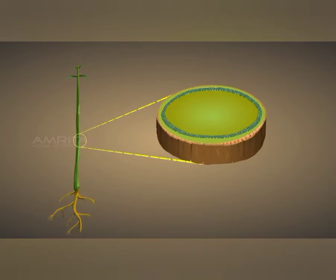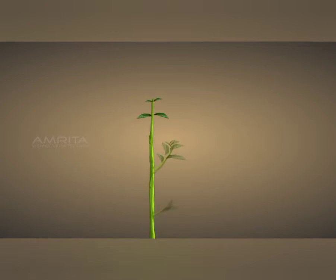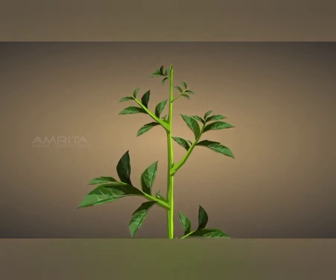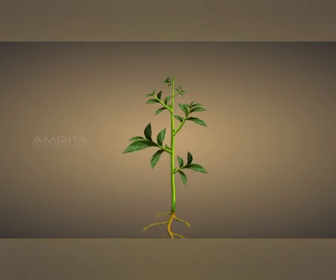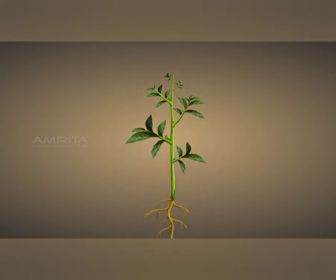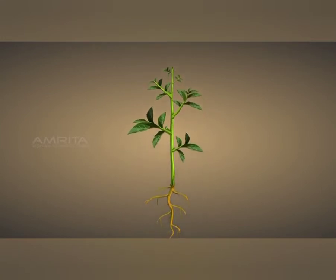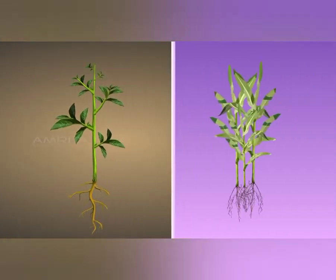Coming to the lateral meristems, it is also called as cambium and it is present between xylem and phloem. It is responsible for the lateral growth of the plant, which means sidewise growth of the plant. So lateral meristems or cambium is responsible for the increase in diameter of the plant.